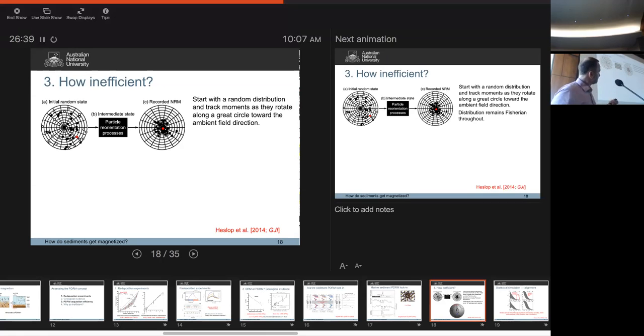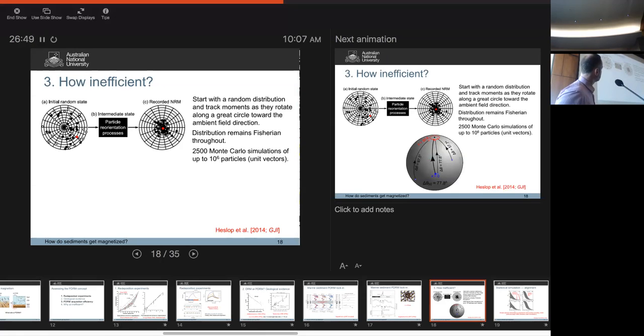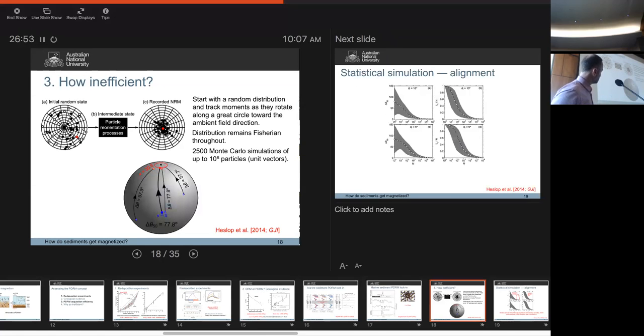We start with random and we track movements of particles as we rotate them toward the ambient field direction. The distribution of both is for sharing. We do 2,500 Monte Carlo simulations of up to a million particles. We treat each particle as a unit vector. Essentially what we're doing is saying, if this is the mean direction and that's the alpha 95 around it, how much rotation does each particle need to go through to get within that 95% uncertainty? Delta theta is the angular change that that magnetic moment needs to rotate through. Delta theta 50 is the median rotation angle required to get from whatever random state to a non-random state.